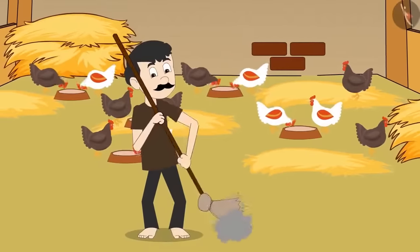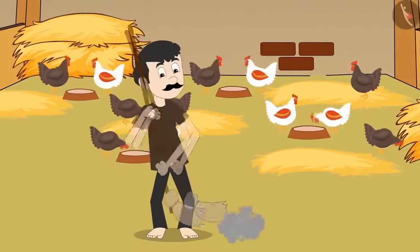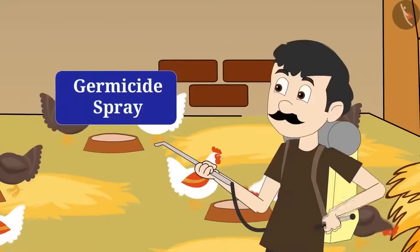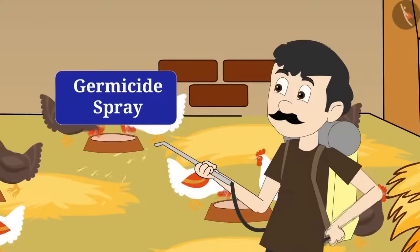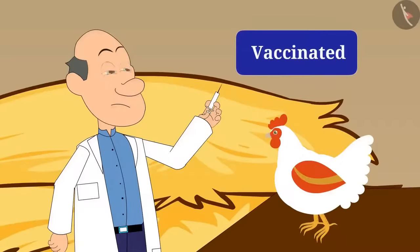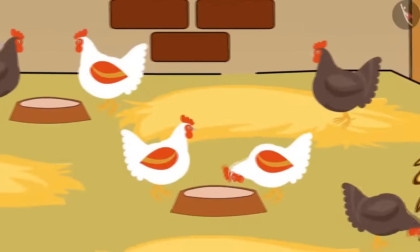Cleanliness is taken care of in cattle farming. Cleanliness is also taken care of in poultry farming. Germicide is also sprayed and chickens are vaccinated to keep them disease-free. So, this is all about poultry farming.